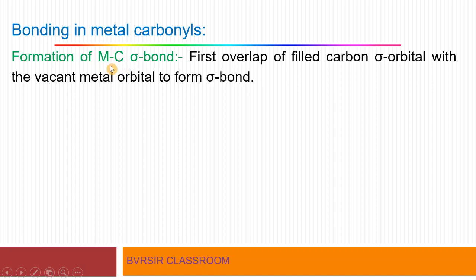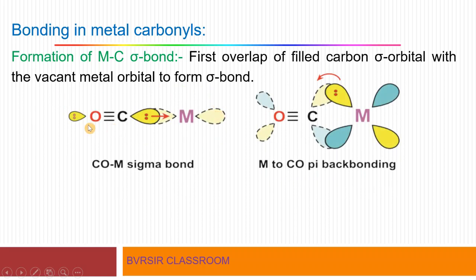I am from the Department of Chemistry, Government College Autonomous, Rajamahendravaram. Let's start with the first stage: formation of the M-C sigma bond. In the first stage, a sigma bond forms via overlap of the filled carbon sigma orbital with the vacant metal orbital to form a sigma bond. In the carbon monoxide molecule, the electron pair transfers into the vacant metal orbital, forming the sigma bond.